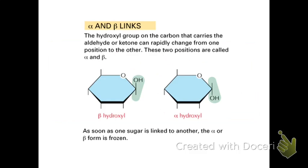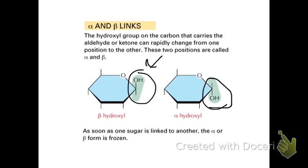When the OH is in the alpha position, when it forms the link it will be an alpha linkage. Here is the alpha and here is the beta. Right now, all of the major disaccharides we have seen are in the alpha position.